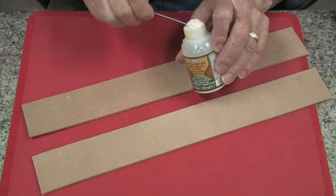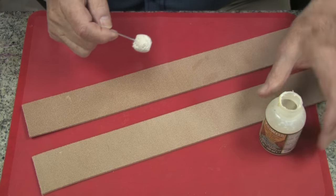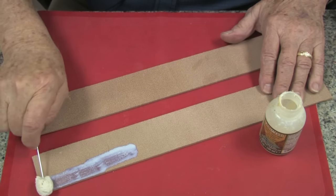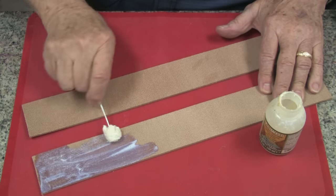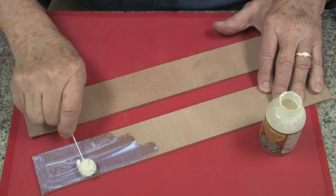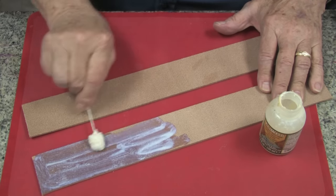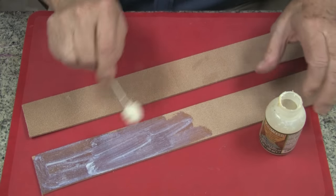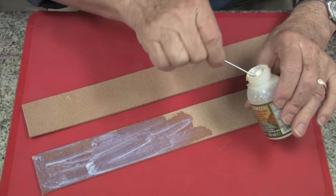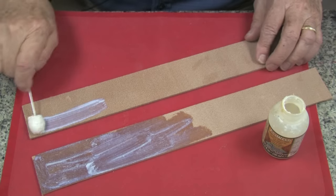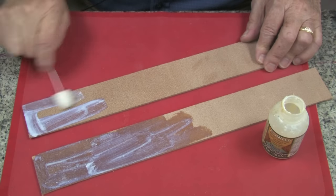Next, I will use water-based contact cement and I will cover completely the flesh side of both of these pieces. I will do this all the way down.